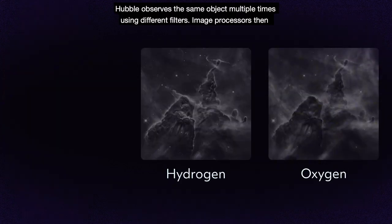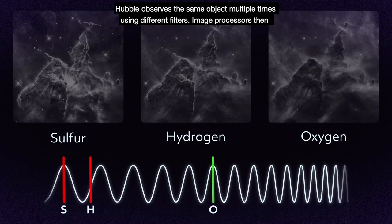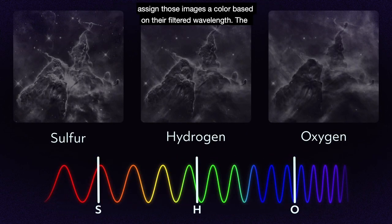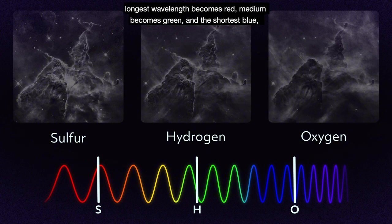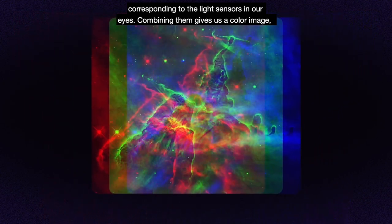Hubble observes the same object multiple times using different filters. Image processors then assign those images a color based on their filtered wavelength. The longest wavelength becomes red, medium becomes green, and the shortest blue, corresponding to the light sensors in our eyes. Combining them gives us a color image.